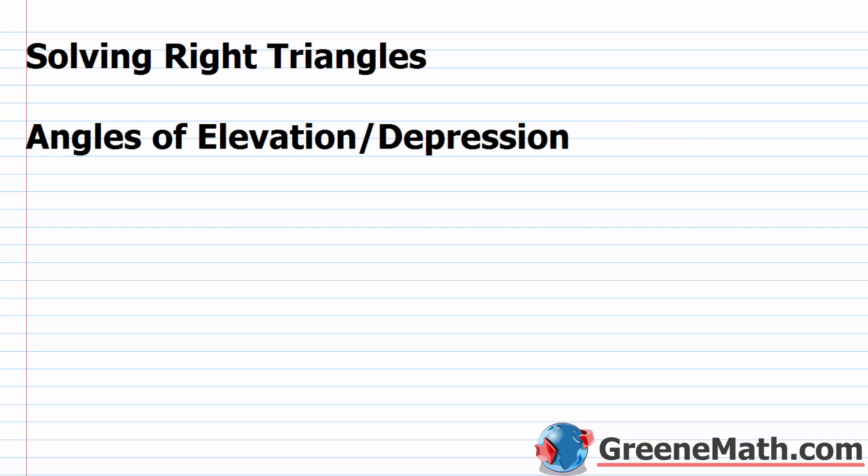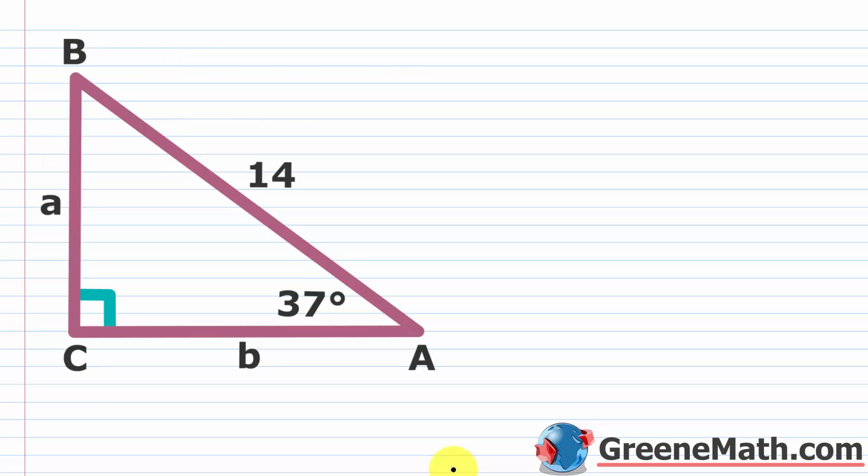In this lesson, we want to talk about solving right triangles and also look at some word problems that involve angles of elevation and angles of depression. When we talk about solving a right triangle, we're just trying to find all the missing angles and all the missing sides.